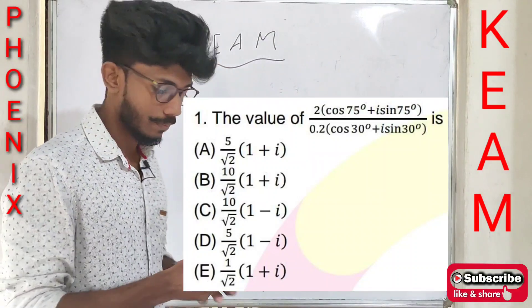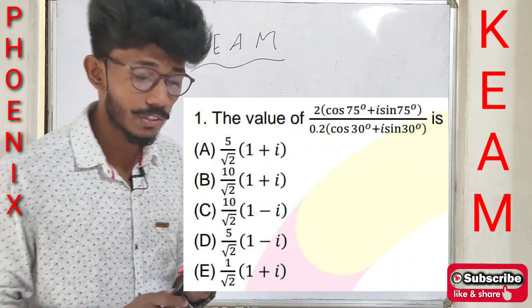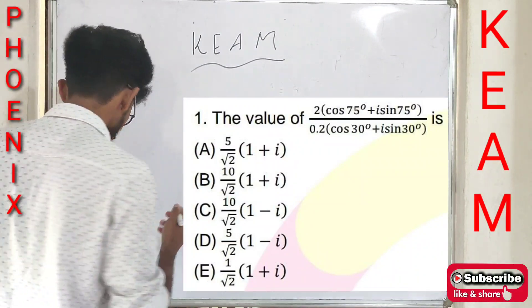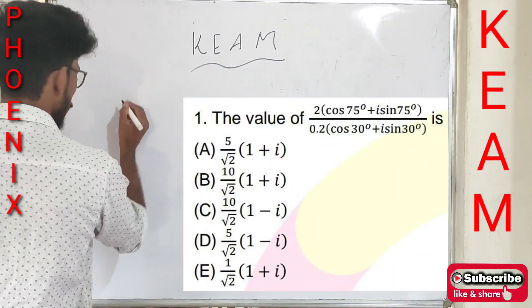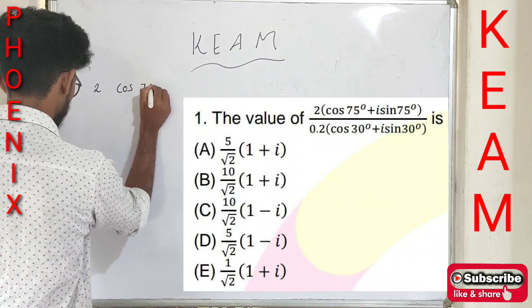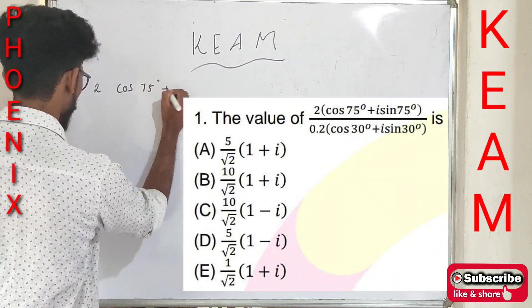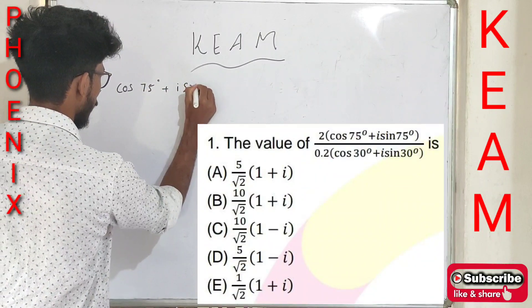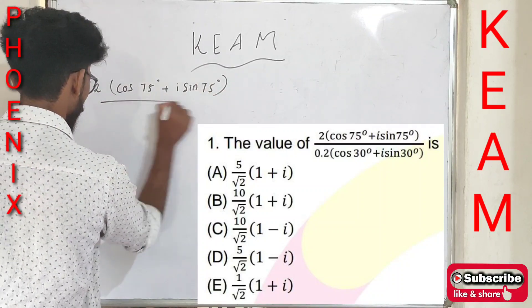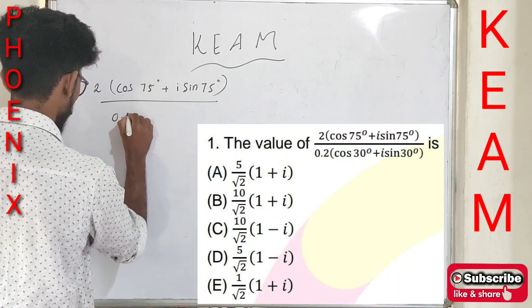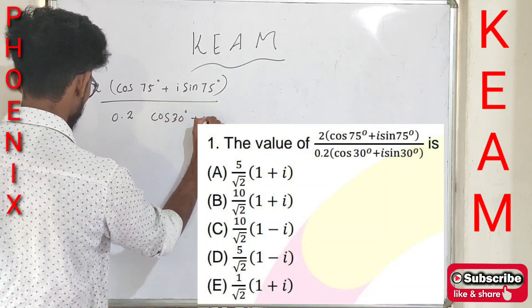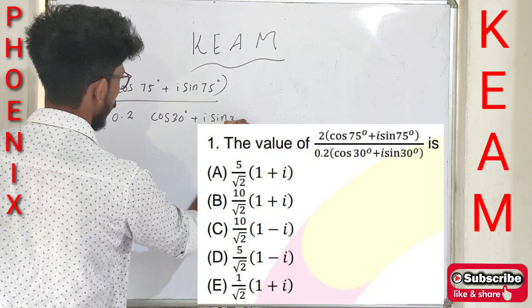The first question is: find the value of 2(cos 75° + i·sin 75°) divided by 0.2(cos 30° + i·sin 30°).